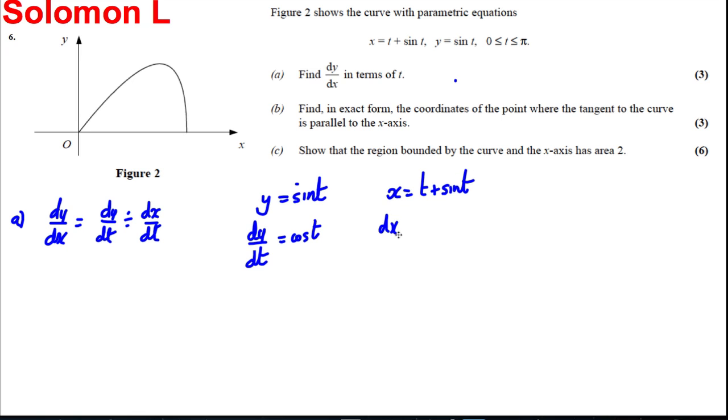then dx by dt must be equal to 1 plus cos t. So therefore, we can use this dy by dx must be dy by dt, which is cos t, divided by 1 plus cos t. So it's simply cos t divided by 1 plus cos t for part A. In terms of t and everything's done.